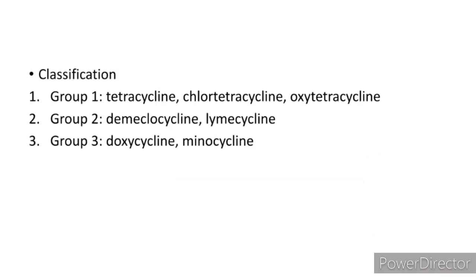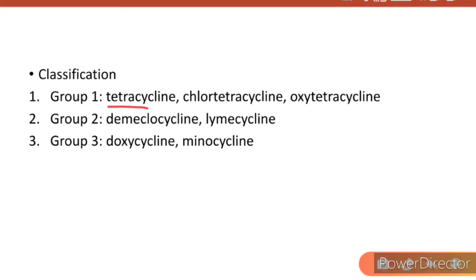Tetracycline is classified into three groups. Group one includes tetracycline, chlorotetracycline, and oxytetracycline. Group two is demeclocycline and lymecycline. Group three is doxycycline and minocycline.